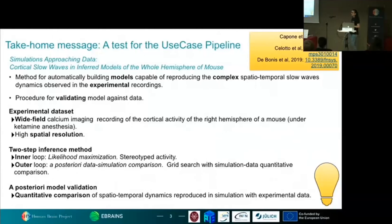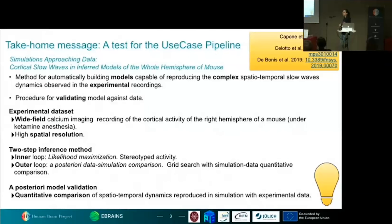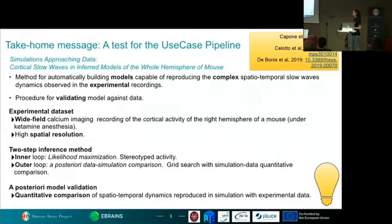In this work we present a two-step inference method. This is articulated first into an inner loop — one flow of information from experimental dataset to simulated dataset — to optimize the inner parameters of the mean field network. Then we need an outer loop: a posterior calibration of the external parameters of the mean field model in order to reproduce all the variety observed in the experimental dataset. We can rely on the incredibly high spatial resolution that gives us the possibility to observe quite a variety in this spontaneous activity, and we want to reproduce all this variety through our method.